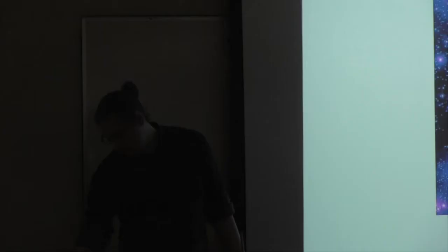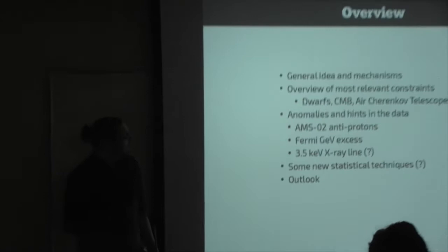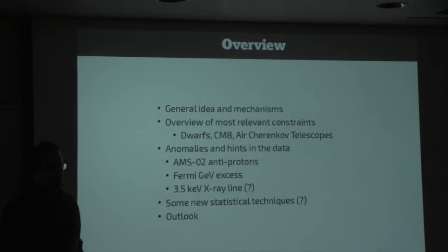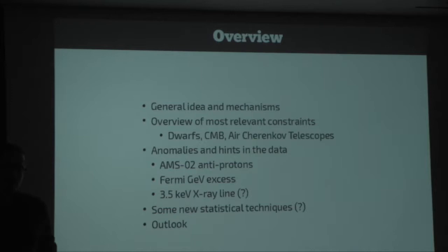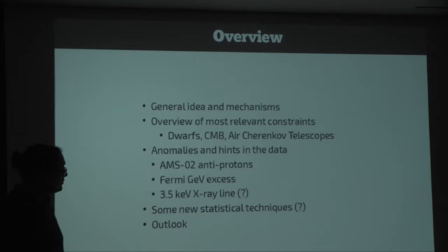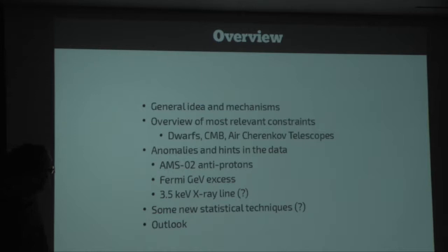What I want to talk about today is indirect dark matter searches — not so much detections, but searches for it. It's a very big field. I want to give you a bit of an overview and then go a bit deeper into a few topics related to some of the anomalies we are seeing in the sky that might be related to dark matter signals or not. And maybe a few words about new statistical techniques helpful for dark matter searches, then an outlook. If this is too slow or too fast, give me some feedback and ask questions. I will have way too much material, so I can cut at any point.